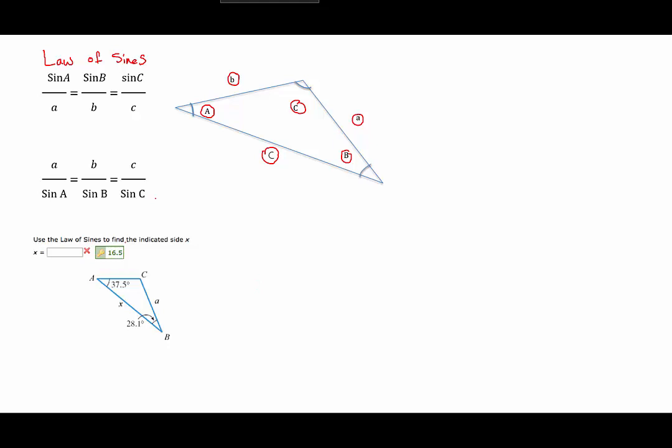Here it says to use the law of sines to find the indicated side X. So here is side X, and here's what we know. We know that angle A is 37.5 degrees. We know that angle B is 28.1 degrees.